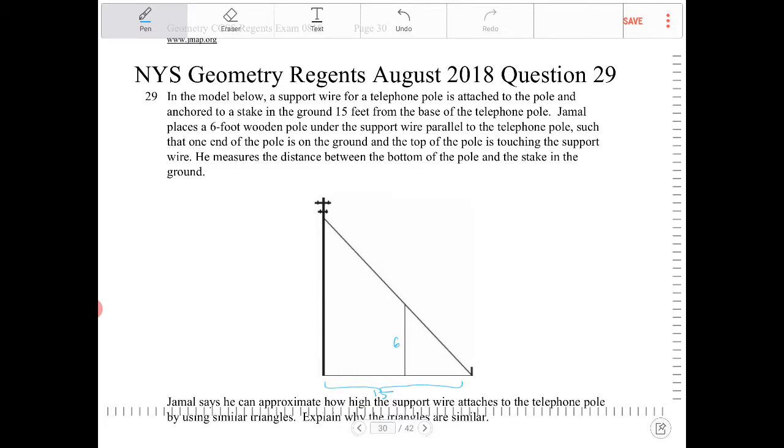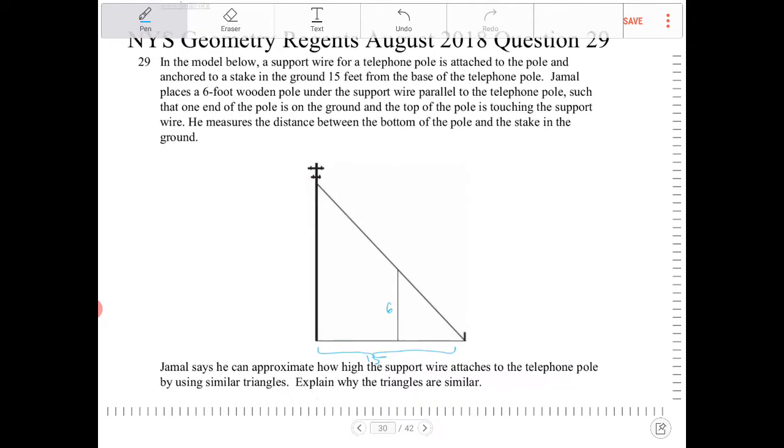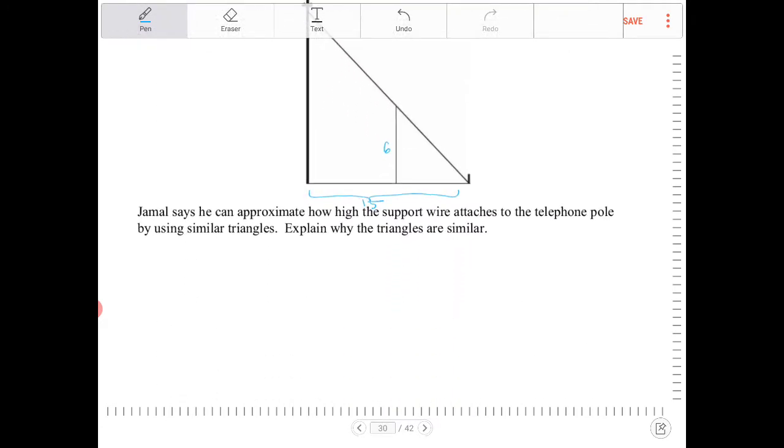Let's see here. He measures the distance between the bottom of the pole and the stake in the ground. So he measures the distance from the bottom of the pole and the stake in the ground. Okay, but they did not tell us what that dimension is, but he measured it.